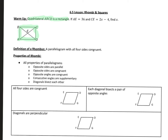It's telling us here that AE, this little segment, is equal to 36. And it's also giving us that segment CE is 2x minus 4. What do you remember about the diagonals of a rectangle? They bisect each other. So AE is congruent to CE, because these diagonals bisect each other and create congruent pieces of our diagonal.